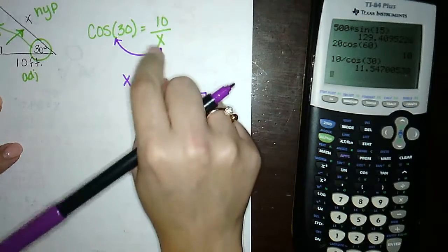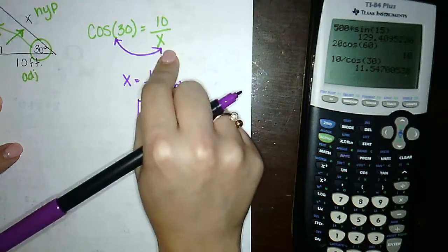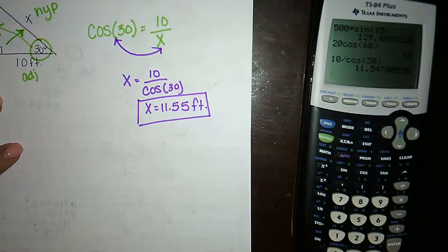So, anytime x is in the denominator, you just switch these positions, and you're going to divide instead of multiplying.